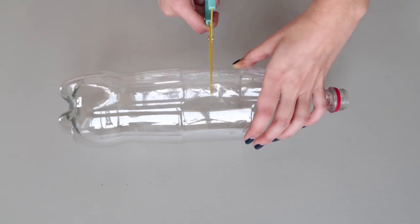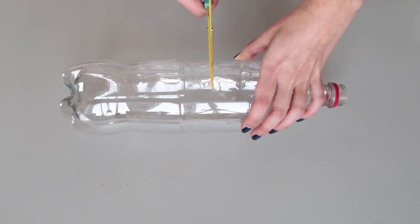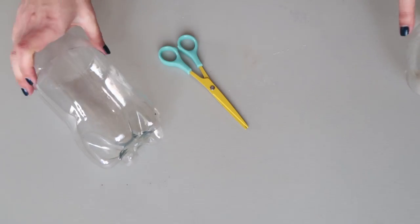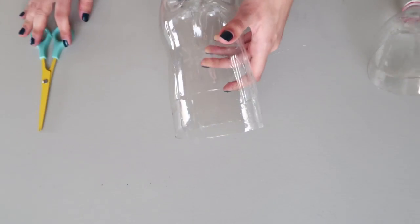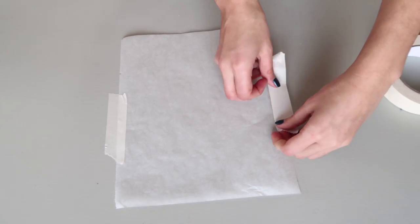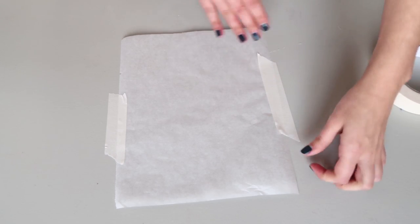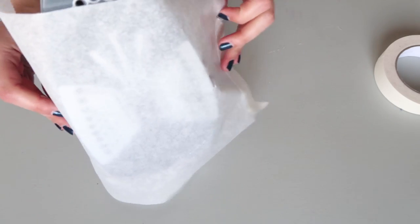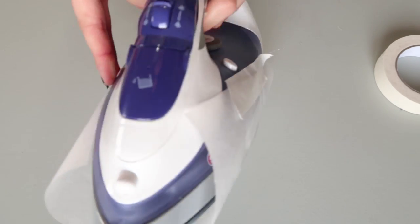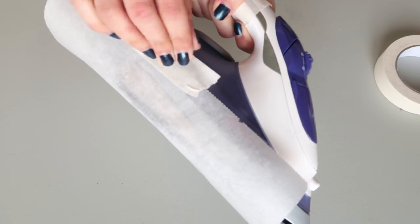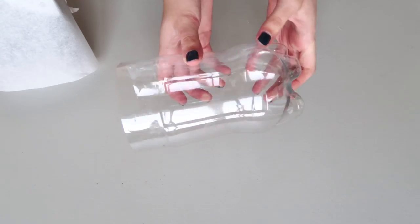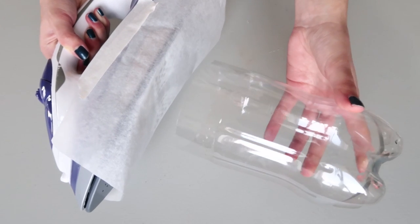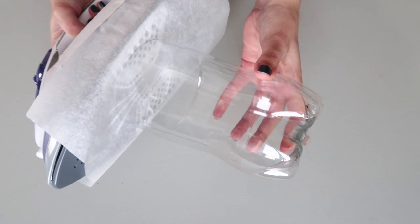So let's get started. Start by cutting your bottle just a little before the center. To give it a better finish, I'm going to melt the edge of the plastic using an iron. Make sure to protect it by using a piece of wax paper and tape to hold it. Press the plastic to the iron until the edge starts to melt and curve inwards. Make sure all the sides are even.